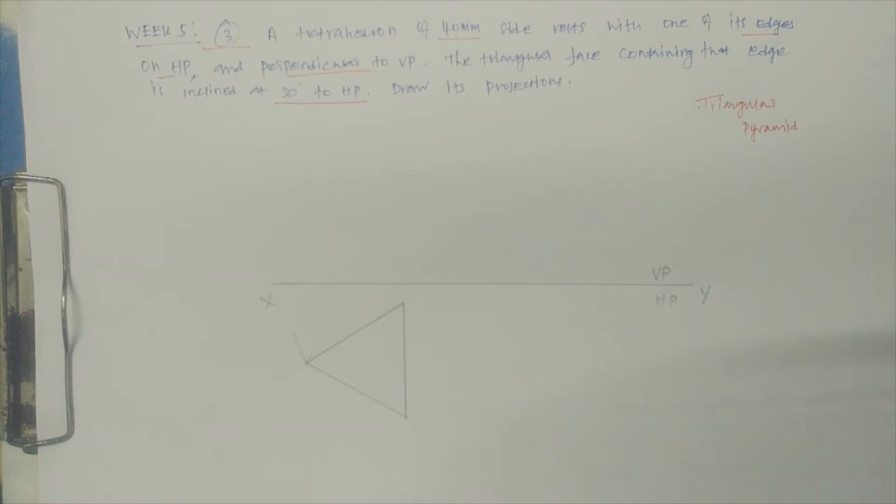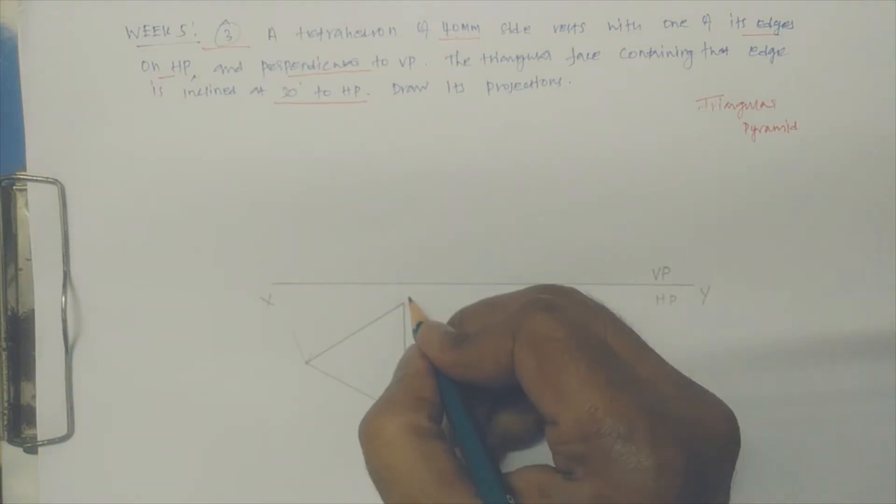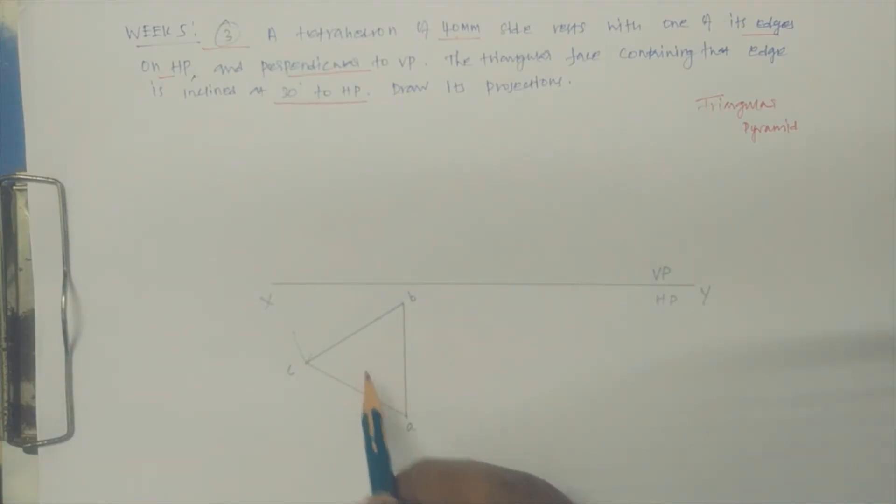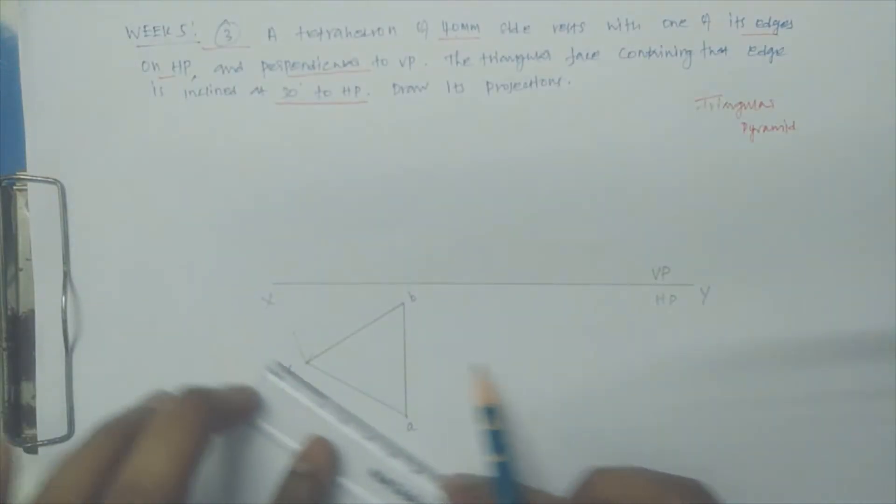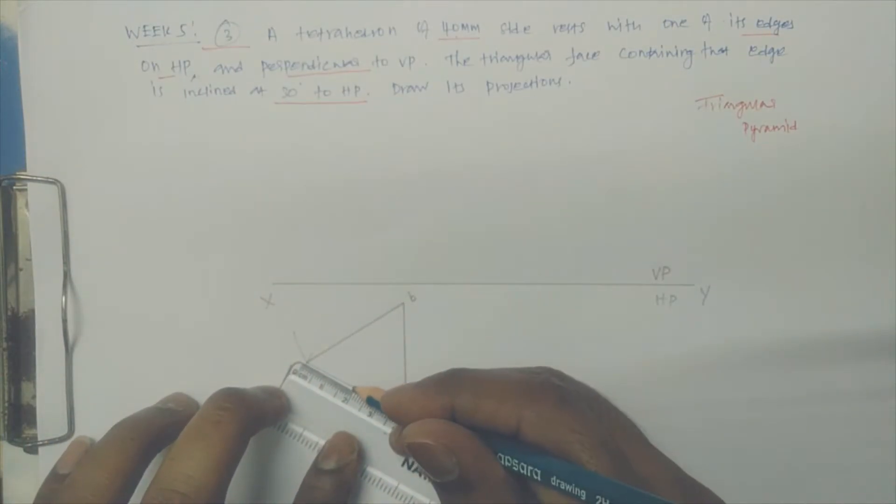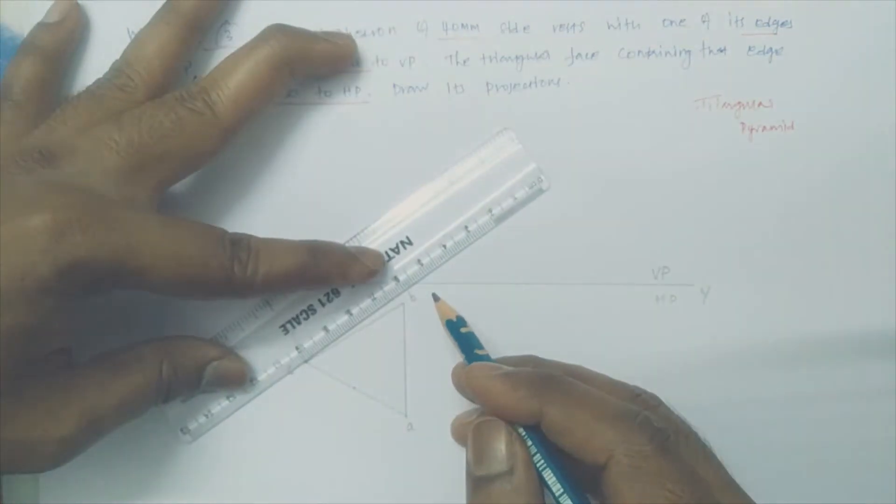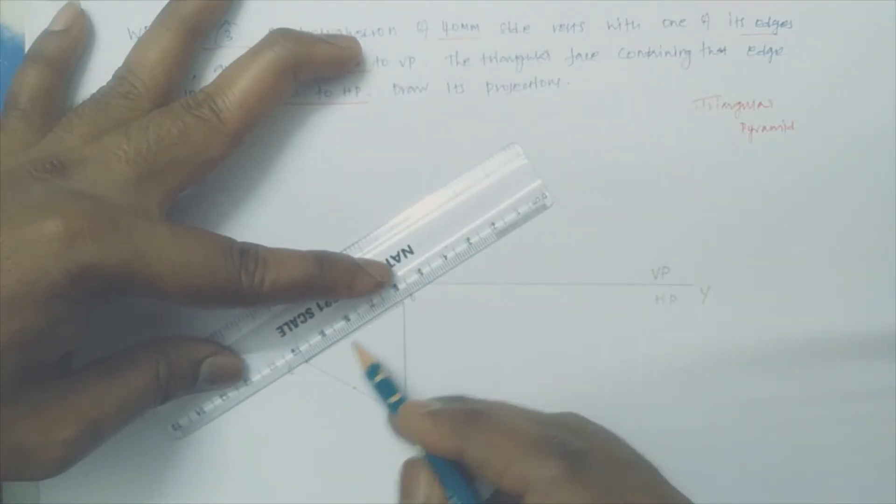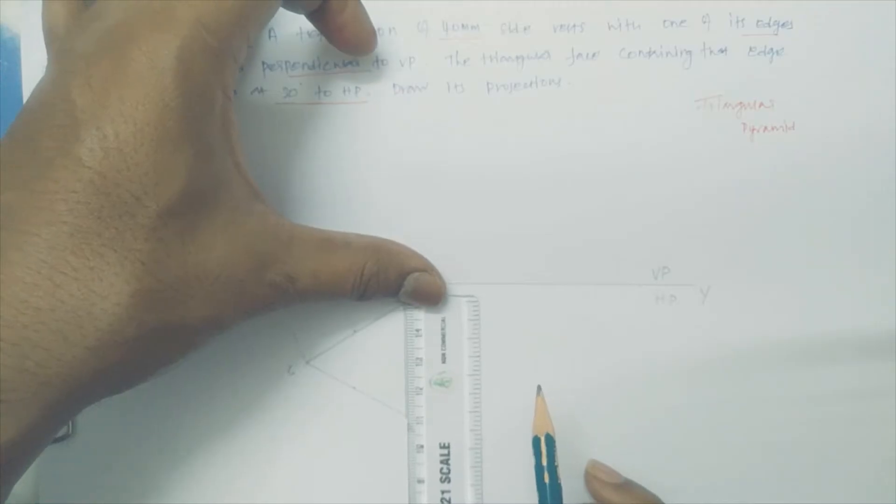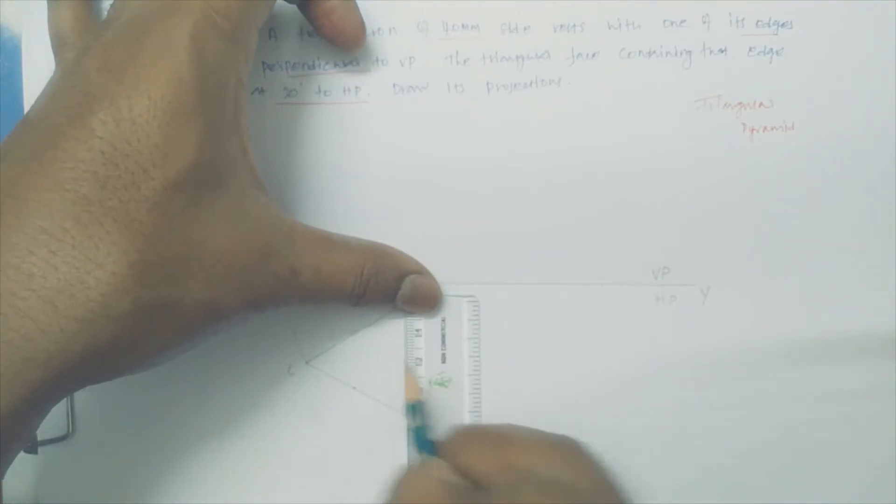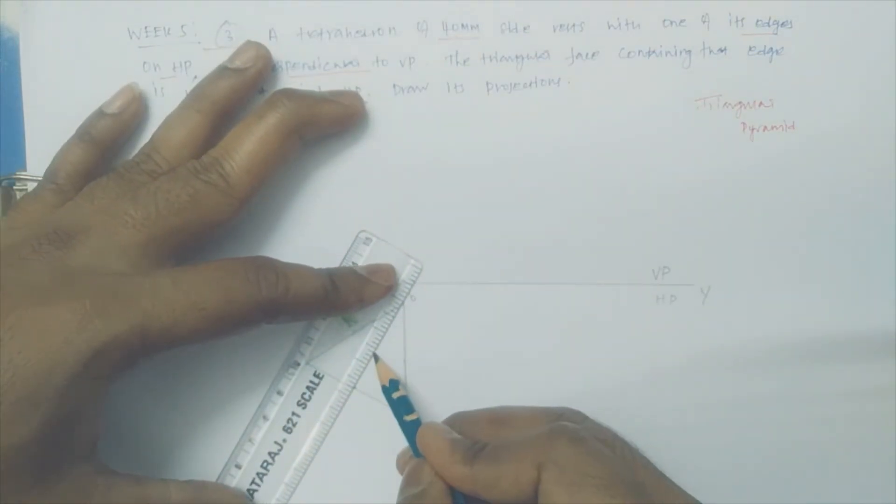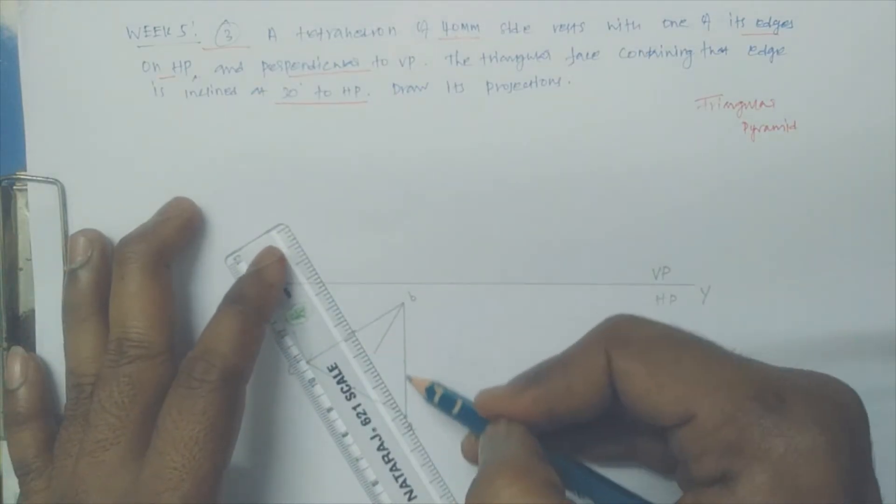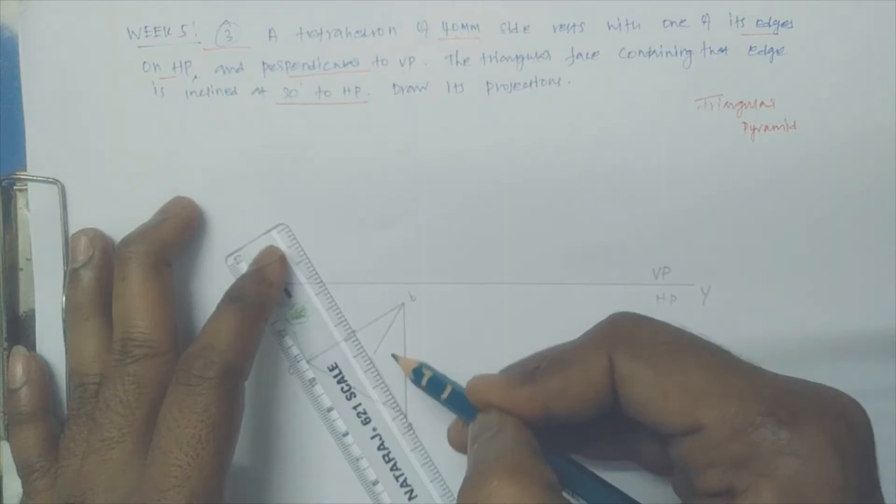Let us measure 40mm. Simply connect. Now you can say this is A, B, and C. Now we need to identify the center. It's simple - 20mm. I need to identify the center.